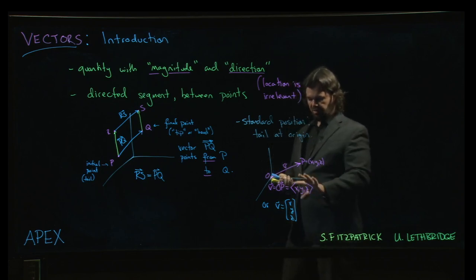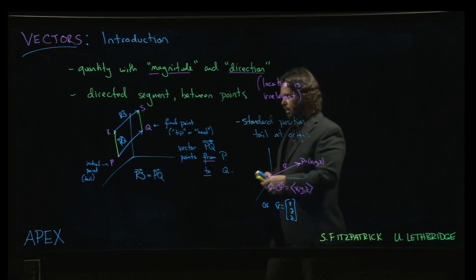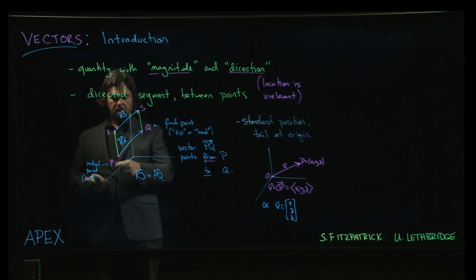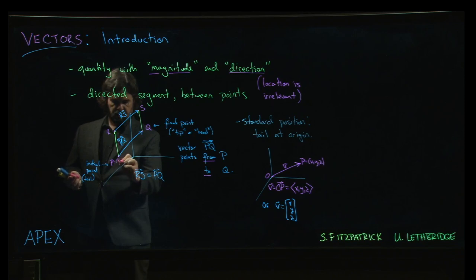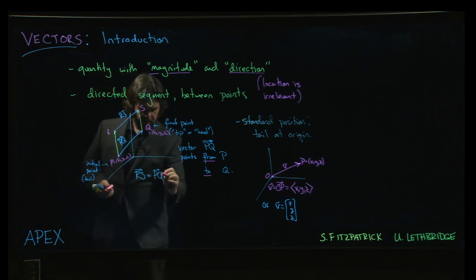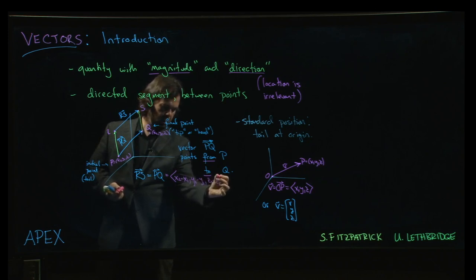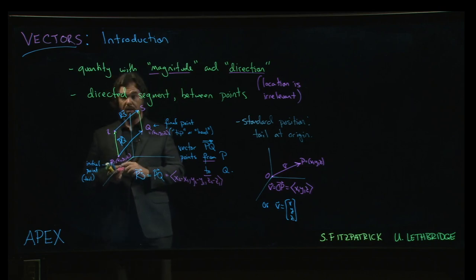So one of the things you'll notice is you can take this idea and if you did have a vector from say P to Q, and say P has coordinates x1, y1, z1, and Q has coordinates x2, y2, and z2. Then this vector PQ, you can write it as x2 minus x1 and then y2 minus y1 and z2 minus z1. So you can write it in this component form like this.